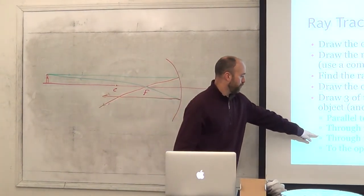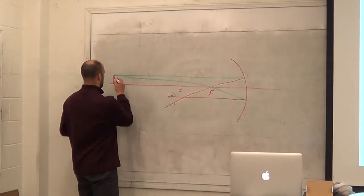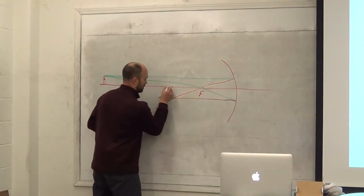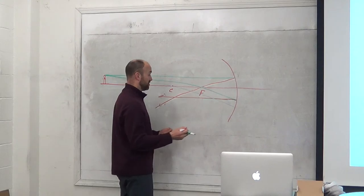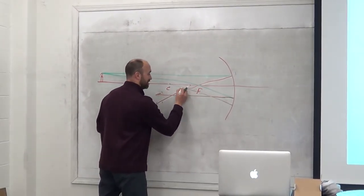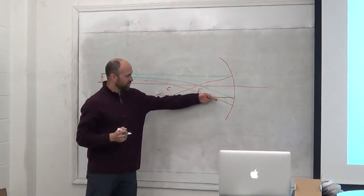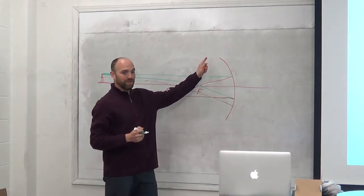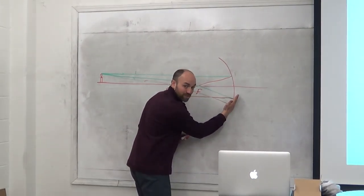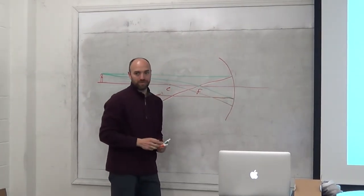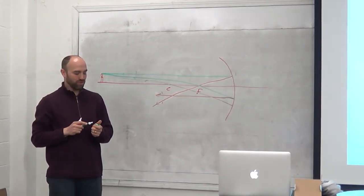Option number three: through the center of curvature. There's my center point right there. I draw a line from the top of my object through the center. Where does that one bounce back? It goes back through the center, because this is a radius of my curve. At any point on the circle, the radius and the surface are always perpendicular — so this is straight in, straight out, every time. That's known line number three.